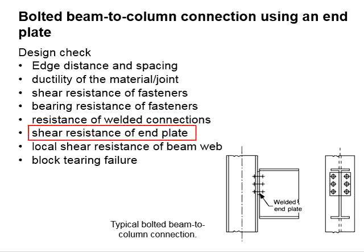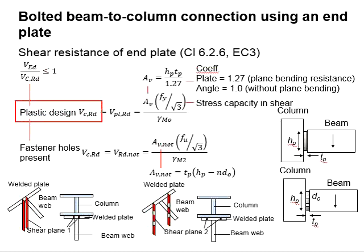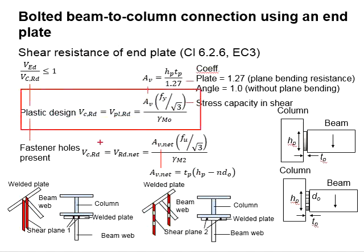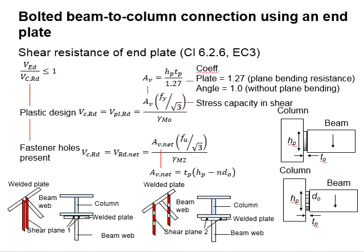Next, we determine the shear resistance of the end plate. The shear load must be less than the shear resistance of the end plate, so that the ratio is less than 1.0. We need to check for both the plastic shear resistance and the shear resistance in the presence of fastener holes. The two cases refer to two different shear planes — for plastic design, we refer to one shear plane, and for the presence of fastener holes, we refer to another.